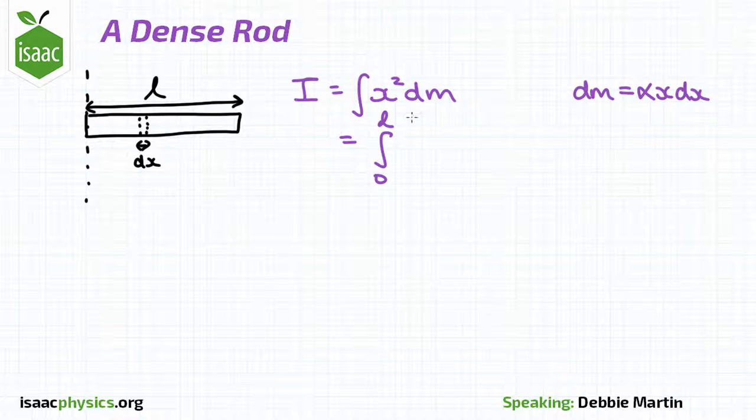And so the moment of inertia is the integral between 0 and L of alpha x cubed dx.